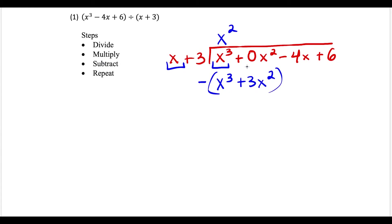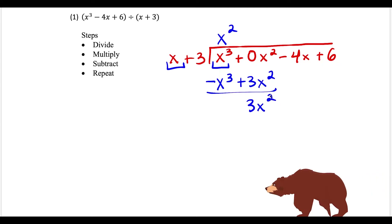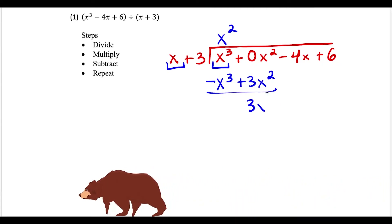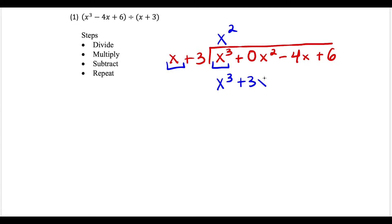Now the next thing you do is subtract. But you have to watch out — there's a very common trap. What people do by mistake is they just subtract x to the third, then do 0 plus 3 giving 3x squared. Be careful — this is a dangerous bear trap. You're subtracting a polynomial, so use the technique called keep, change, change: keep this part, change the operation to addition, and change the sign of everything on the inside.